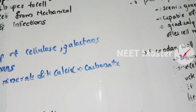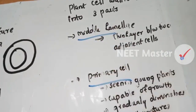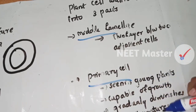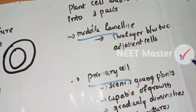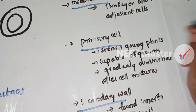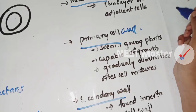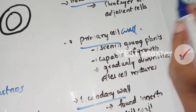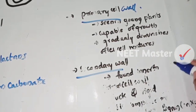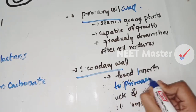Plant cells are differentiated into 3 parts based on the cell wall: middle lamella, primary cell wall, and secondary cell wall. The middle lamella is a thin layer between two adjacent cells. Primary cell wall is seen in young plants and is capable of growth; it gradually diminishes after the cell matures.